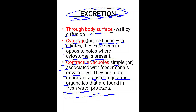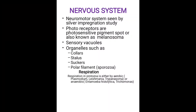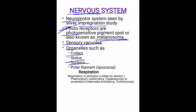There are three major modes of excretion in protozoans: through the body surface, through the cytopyge, and through contractile vacuoles. The nervous system of protozoans includes a neuromotor system studied by silver impregnation. It contains photoreceptors or photosensitive pigment spots, also known as melanosomes, as well as sensory vacuoles and organelles such as collar, stellus, suckers, and polar filaments, seen in Sporozoa.